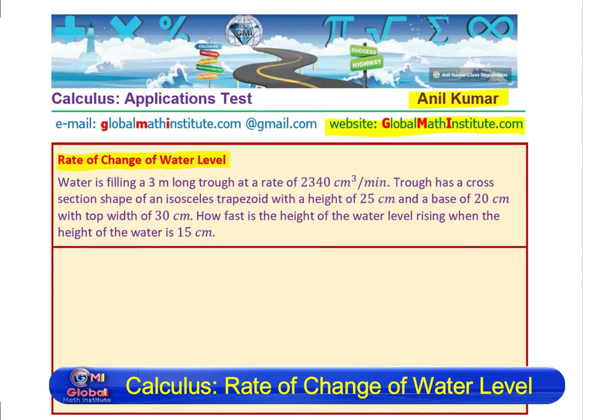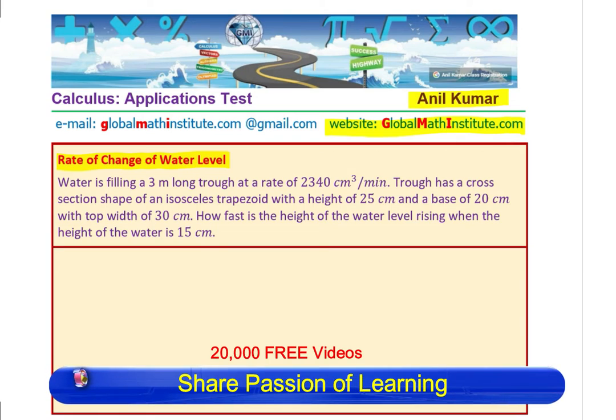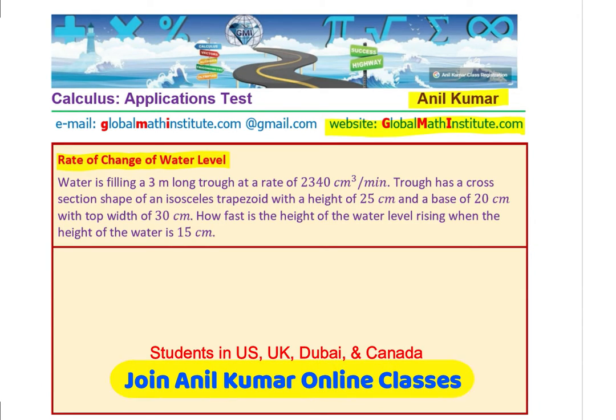Water is filling a 3 meter long trough at a rate of 2340 cubic centimeters per minute. The trough has a cross section shape of an isosceles trapezoid with a height of 25 cm and a base of 20 cm with top width of 30 cm. How fast is the height of the water level rising when the height of the water is 15 cm?